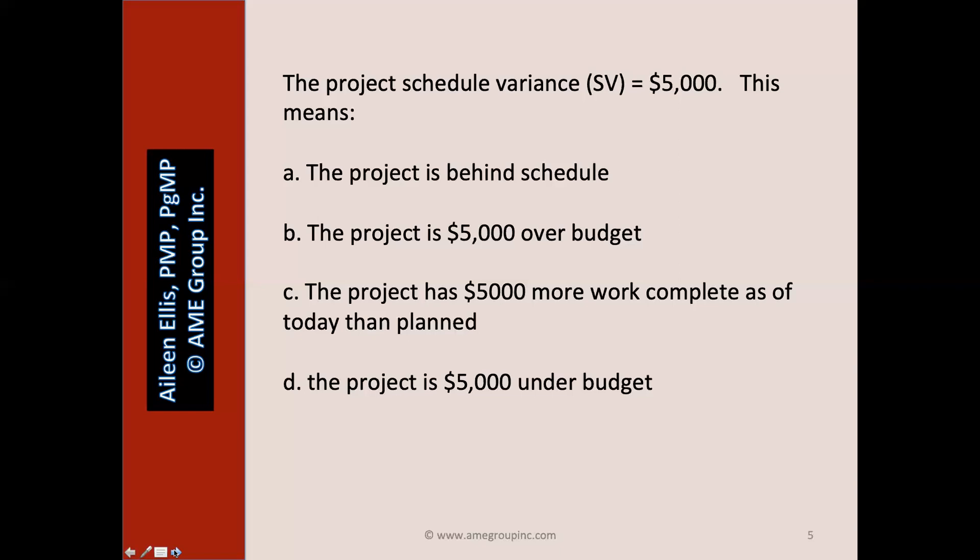The project schedule variance equals $5,000. Here we have a sample question for the PMP or the CAPM exam — pause the video and answer the question on your own, then we'll answer it together. My first question: is this about schedule or is it about cost? Since we're talking schedule variance, it's about schedule.